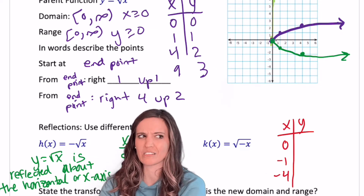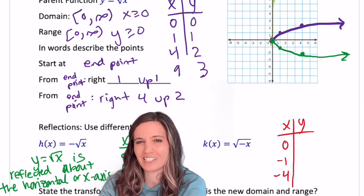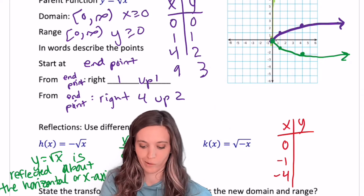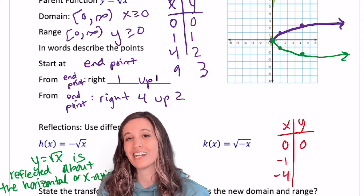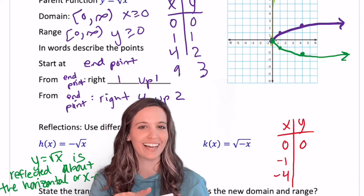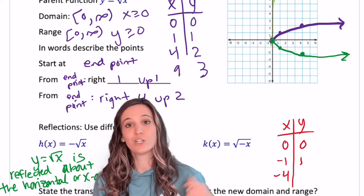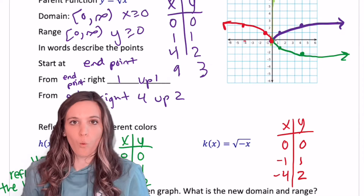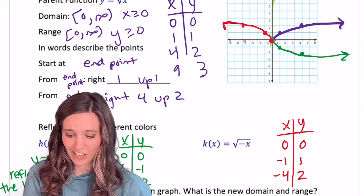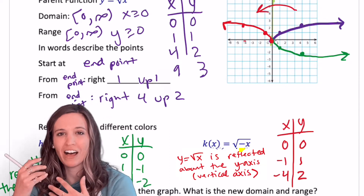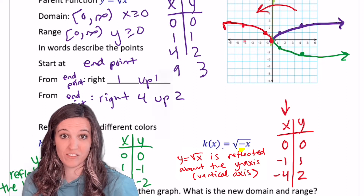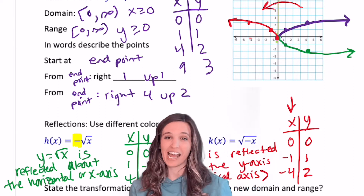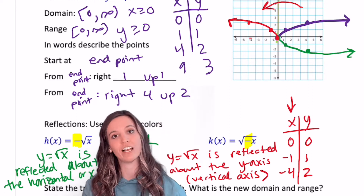k of x equals the square root of negative x — the negative is under the square root. Let's make a table using x-values 0, negative 1, and negative 4. Plugging in 0 gives 0. For negative 1: square root of negative negative 1 — double negatives make a positive — so we get square root of 1, which is 1. For negative 4: square root of positive 4 is 2. Graphing this shows it reflected over the y-axis. The x-values were affected, becoming negatives. So: a negative outside the function reflects about the x-axis, and a negative inside with x reflects over the y-axis.